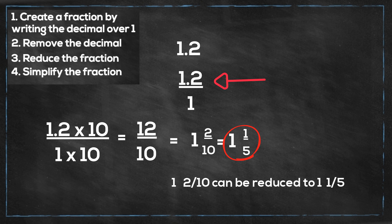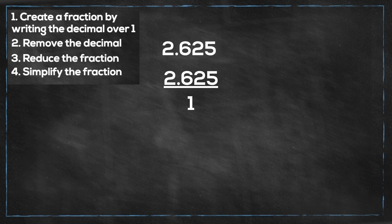Next let's work one with a couple more numbers. We have 2.625. Step 1, we will create a fraction by writing it over 1. Next, we will remove the decimal.